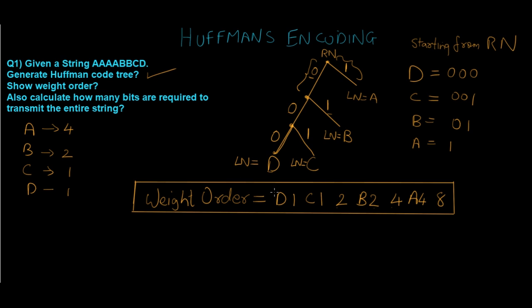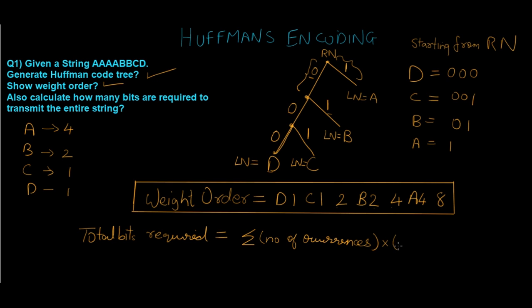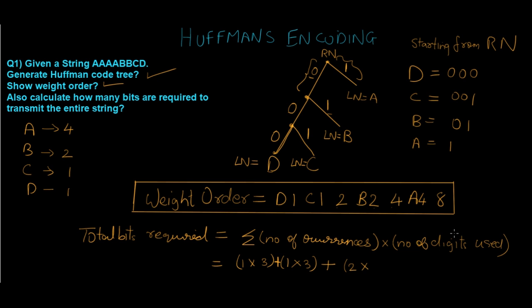Lastly, we calculate how many bits are required to transmit the entire string. The formula is: summation of (number of occurrences × number of digits used) for each character. For d: 1 occurrence × 3 digits = 3. For c: 1 × 3 = 3. For b: 2 occurrences × 2 digits = 4. For a: 4 occurrences × 1 digit = 4. Summing all values gives a final answer of 14 bits.